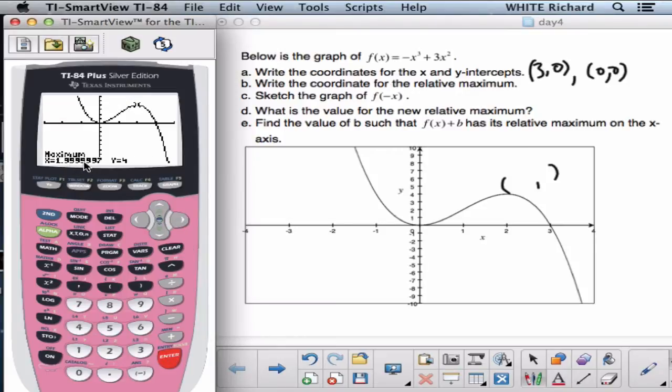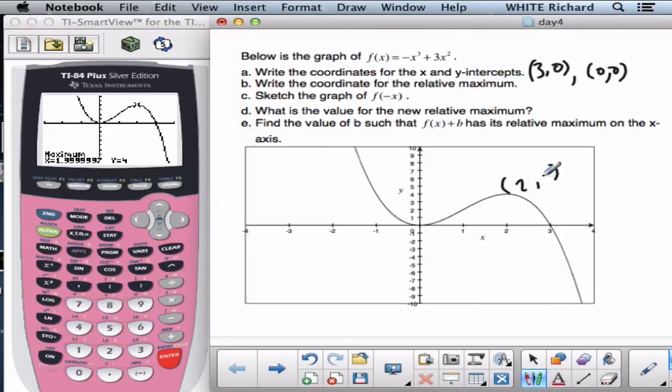We have 1.999999994, which in calculator language is 2, 4. Calculator just doesn't know how to round very well. So that is 2, 4. Okay.